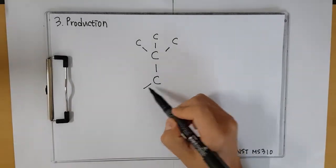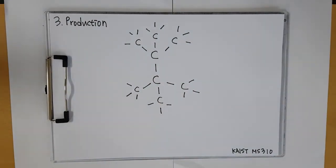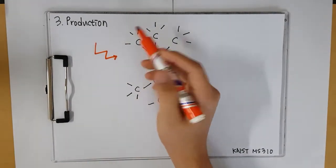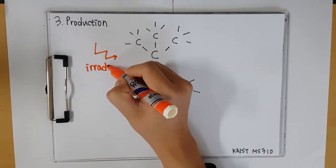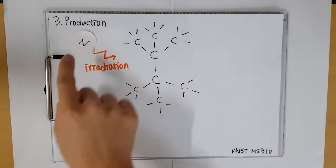Now, we are going to talk about how to produce NV Center in detail. Here is a diamond structure. First, single nitrogen substitutes with the carbon by irradiation using high energy particles such as protons, gamma photons, ions.